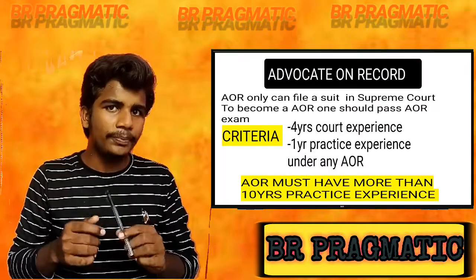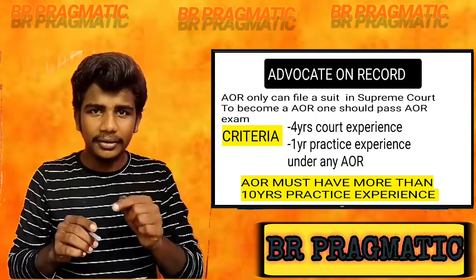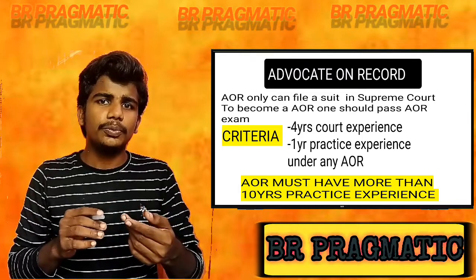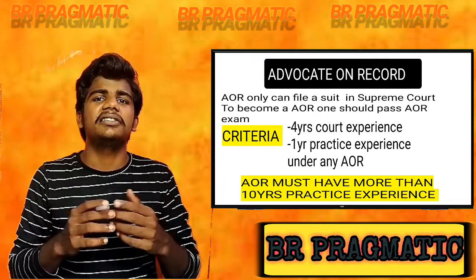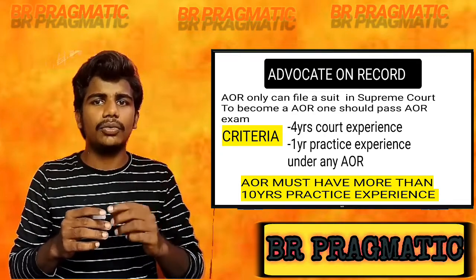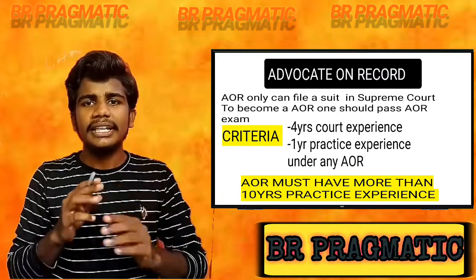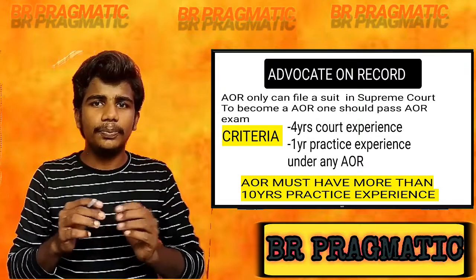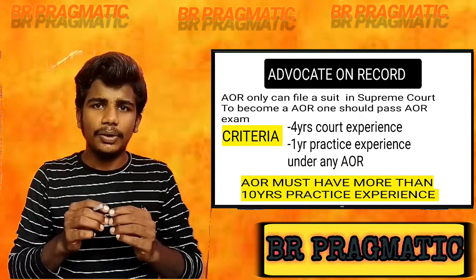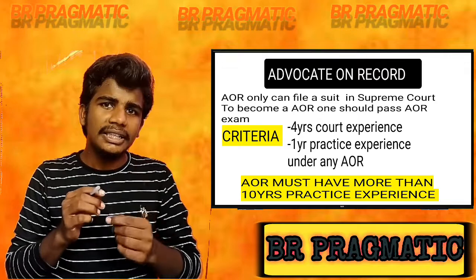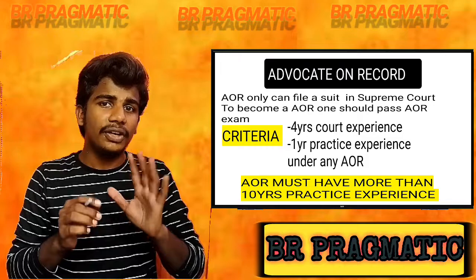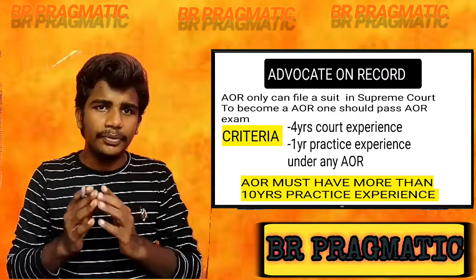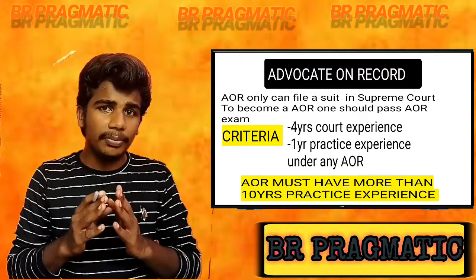Now comes Advocate on Record (AOR). Did you know that only an AOR can file a case in the Supreme Court? Every court has its own rules, functions, and procedures, and the Supreme Court is no different. So that only registered AOR advocates can file a case in the Supreme Court — this prevents the court's time from being wasted. Anyone can draft a case and argue; the restriction is only for filing. To become an AOR, you must pass the Supreme Court AOR exam. The eligibility requires more than five years of experience — four years in any court plus one year as a practicing junior under a Supreme Court AOR who has more than 10 years of practice experience.